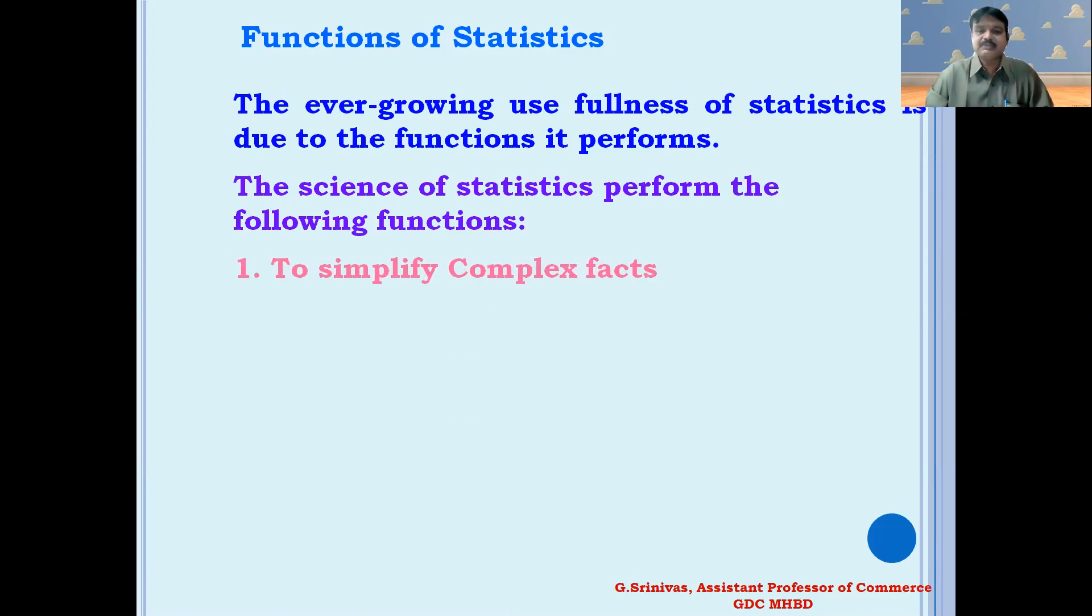Function number one: to simplify complex facts. The basic purpose of statistical methods is to simplify great bodies of numerical data. The complex mass of data are made simple and understandable with the help of statistical methods. Statistical techniques like averages, variation, graphs, and diagrams are some simple techniques to simplify complex numerical data.